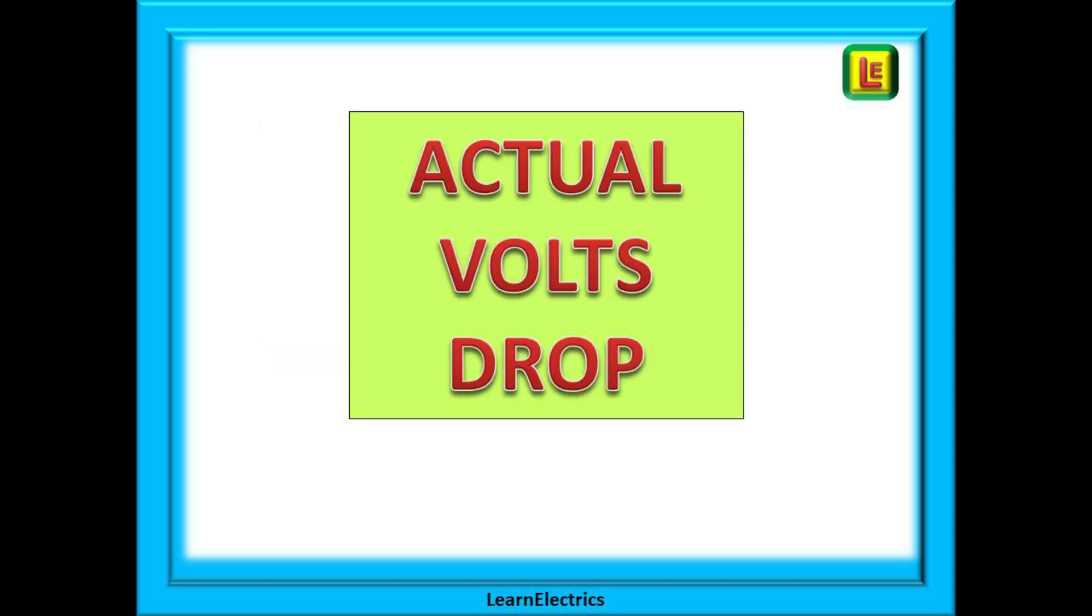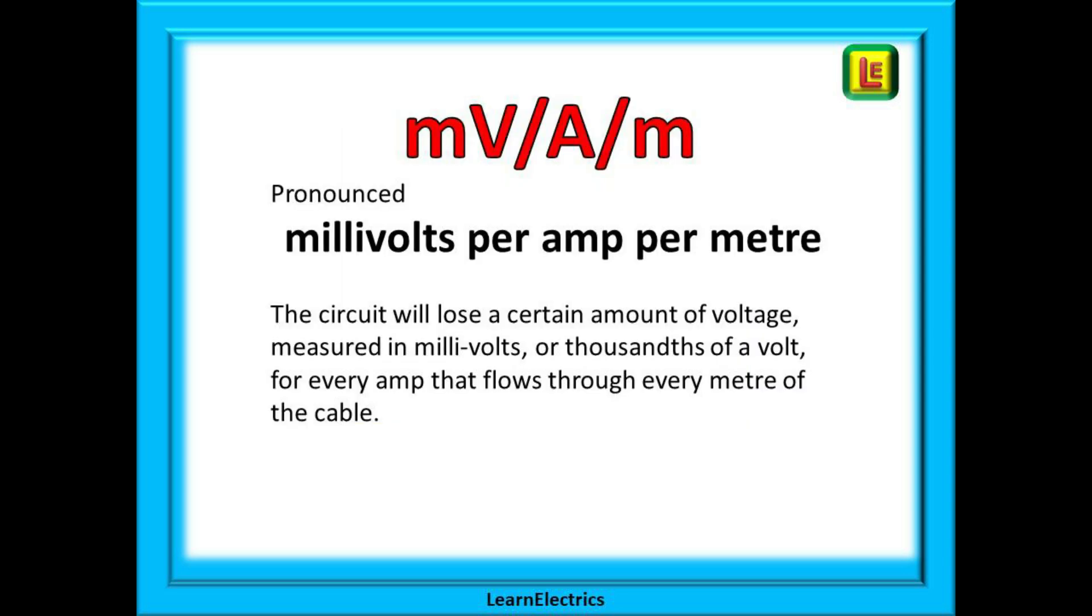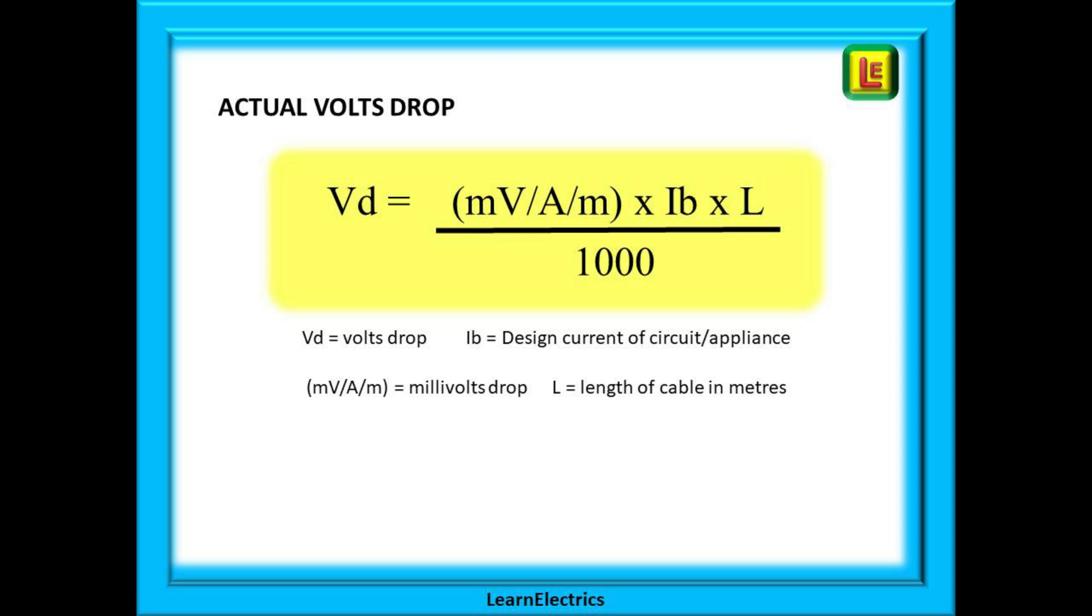Moving on now to actual volts drop and some very easy calculations. This is the second type of exam question and the most likely that you will be asked. The key to all this is this little term here: mV/A/m. This is pronounced millivolts per amp per meter, or just mV/A/m. What is it? Any circuit will lose a certain amount of voltage into the cable. This voltage can be measured in millivolts or thousandths of a volt, and it will lose a certain number of millivolts for every amp that flows through the cable for every meter length of the cable. And the smaller the cable size or CSA, the more voltage that will be lost into the cable. It is harder for current to flow through a smaller copper conductor and it is harder for current to flow through a longer distance of copper conductor.